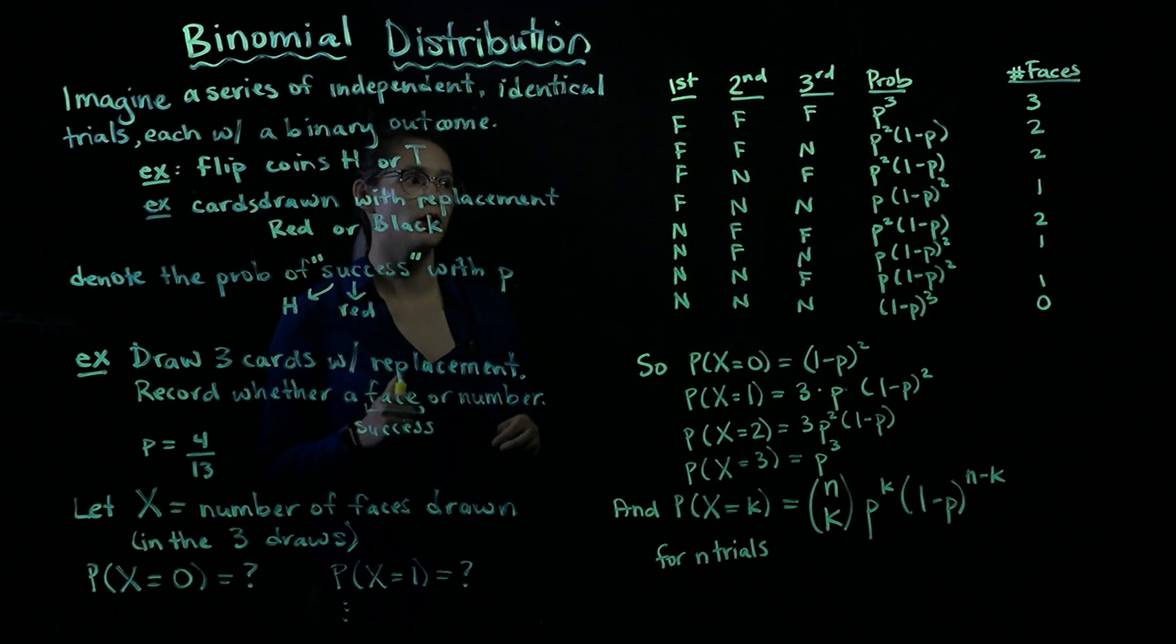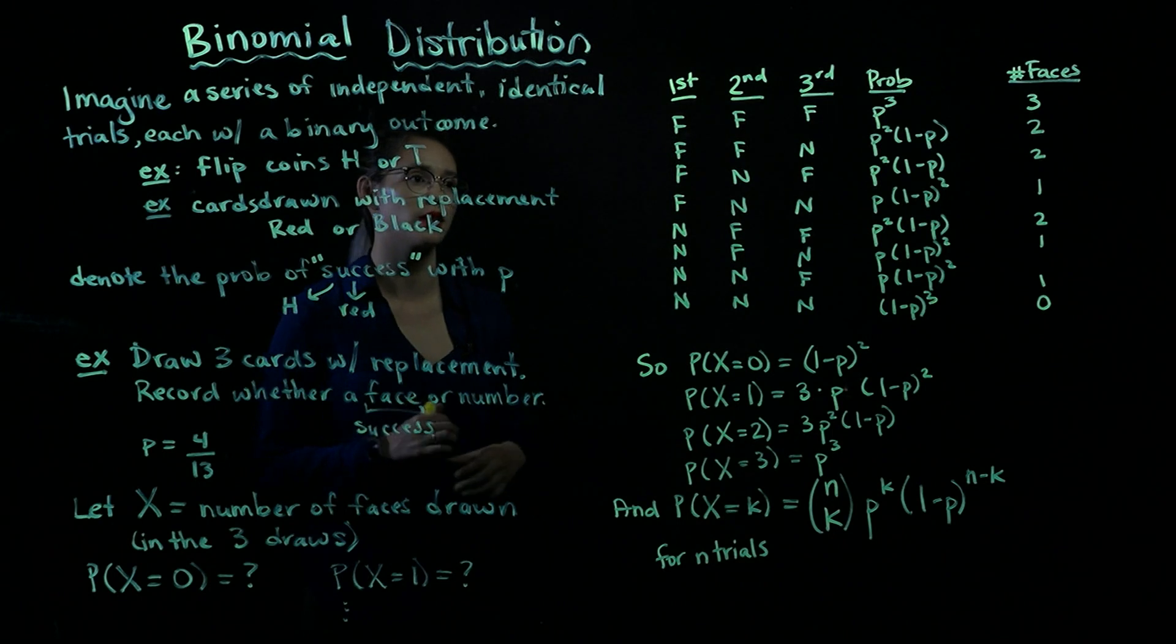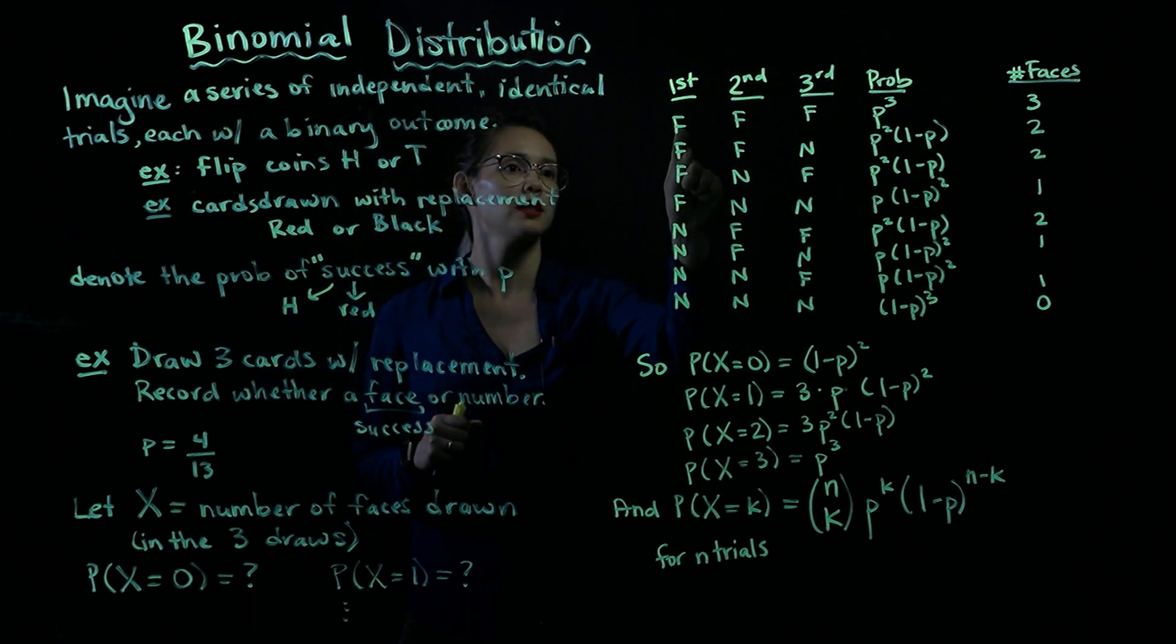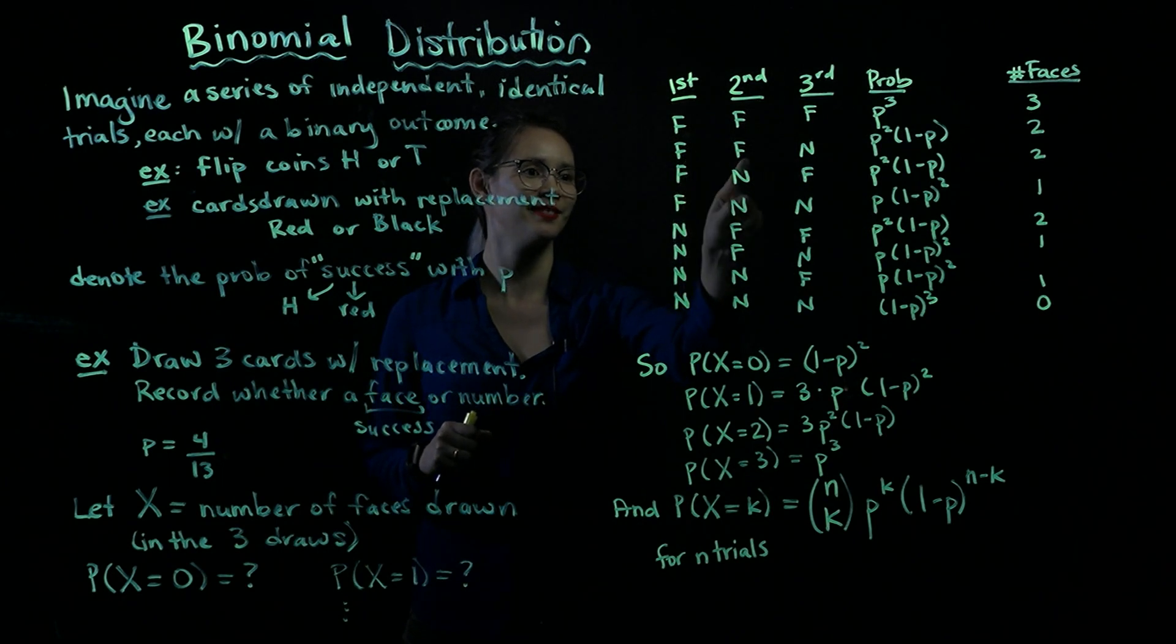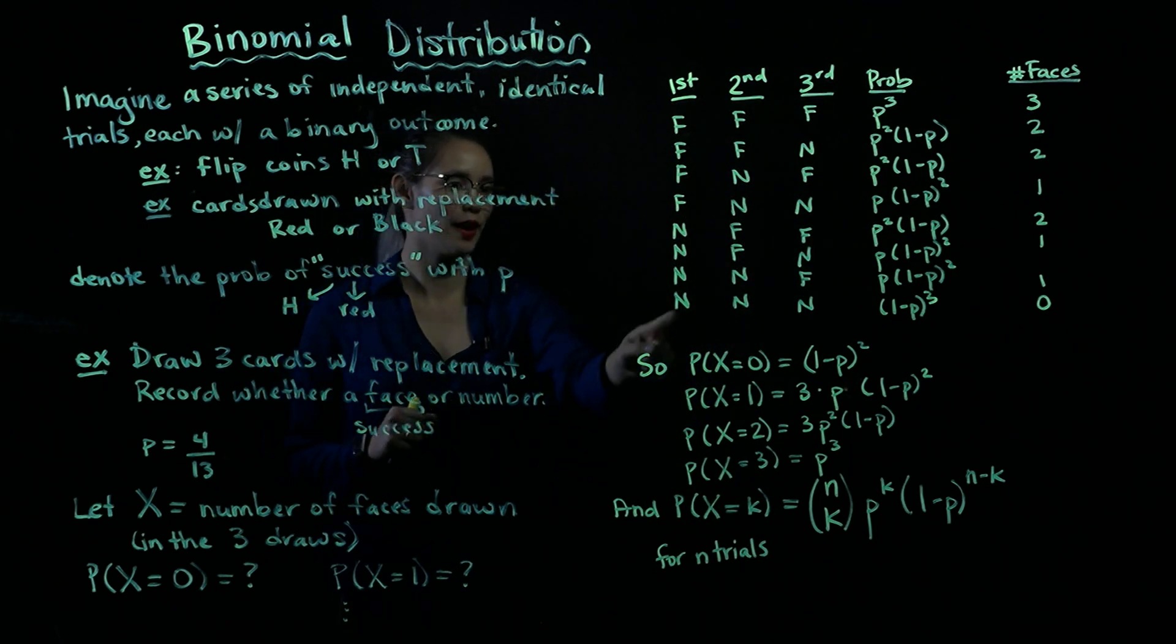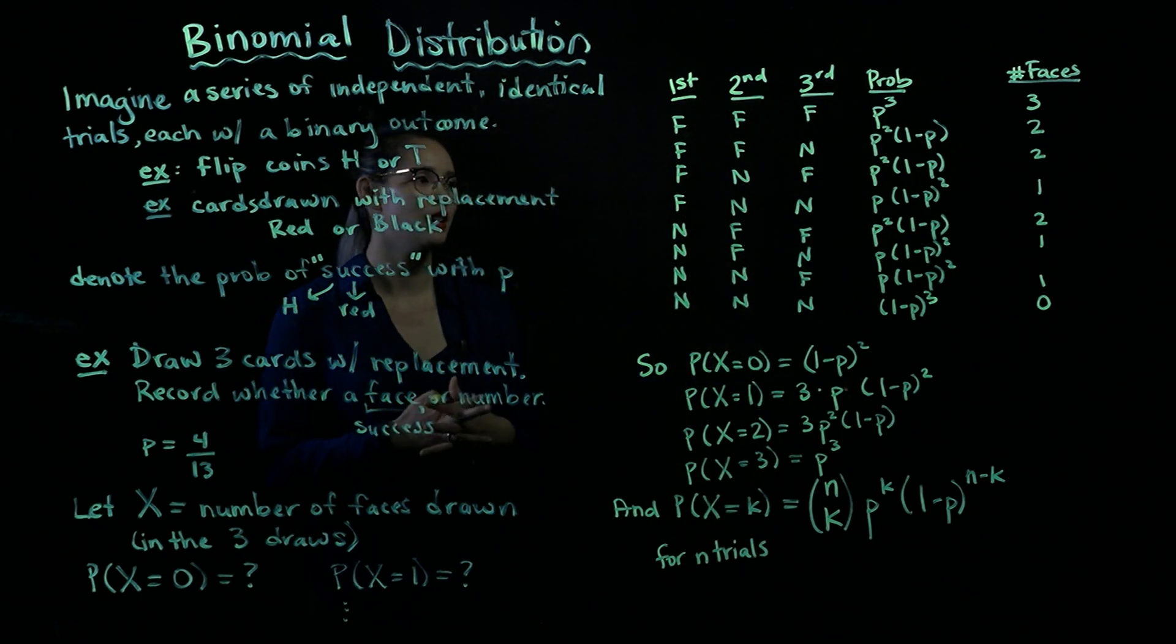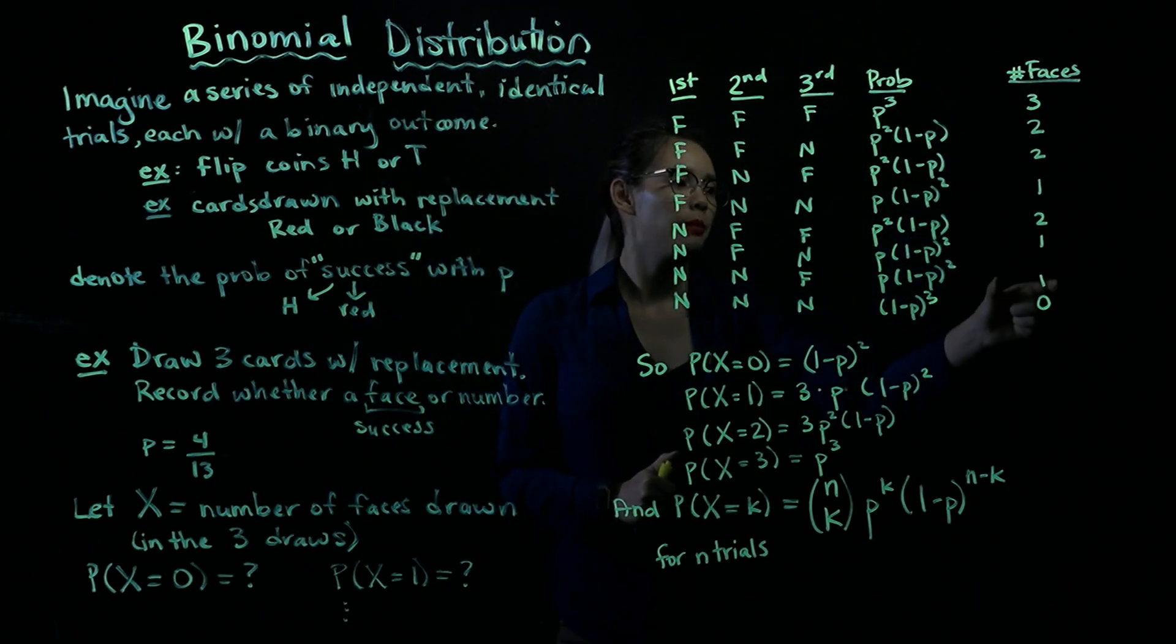Okay, so now we have the probabilities. Now let's go through and figure out how many faces we have in each one of these probabilities. So if we have face, face, face, we have three faces. Here we have two faces. In the next row we have two faces. One face, two face, and so on. And then finally, zero faces.